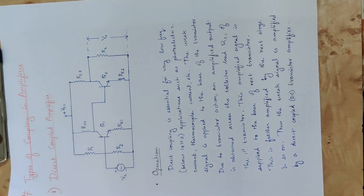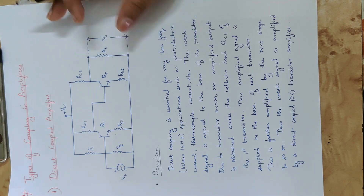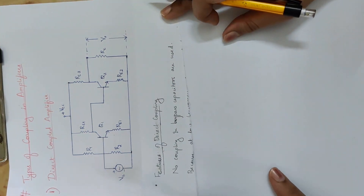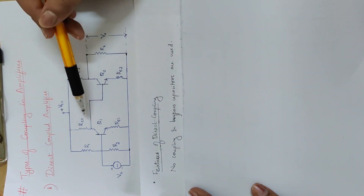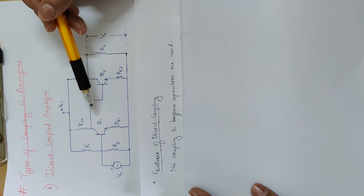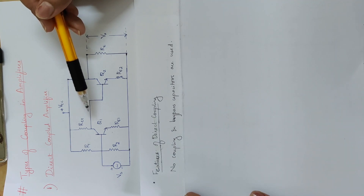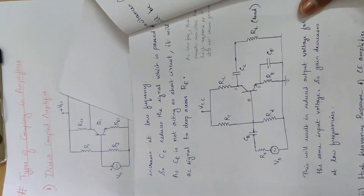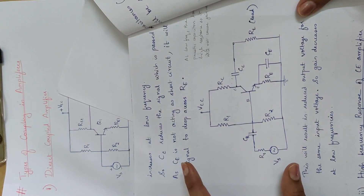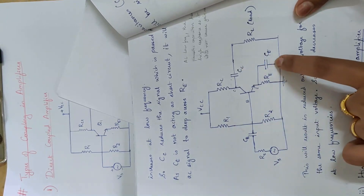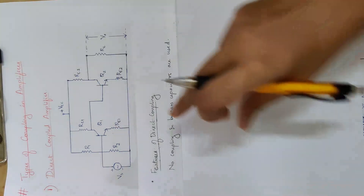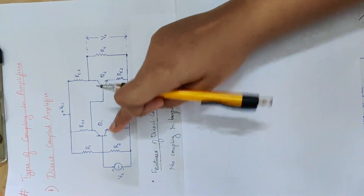Now let us look at the features of direct coupling. For very low frequency signals, we cannot use coupling and bypass capacitors. In an RC coupled amplifier, we use two coupling capacitors and a bypass capacitor. But in the direct coupled amplifier, no coupling capacitors and no bypass capacitors are used.